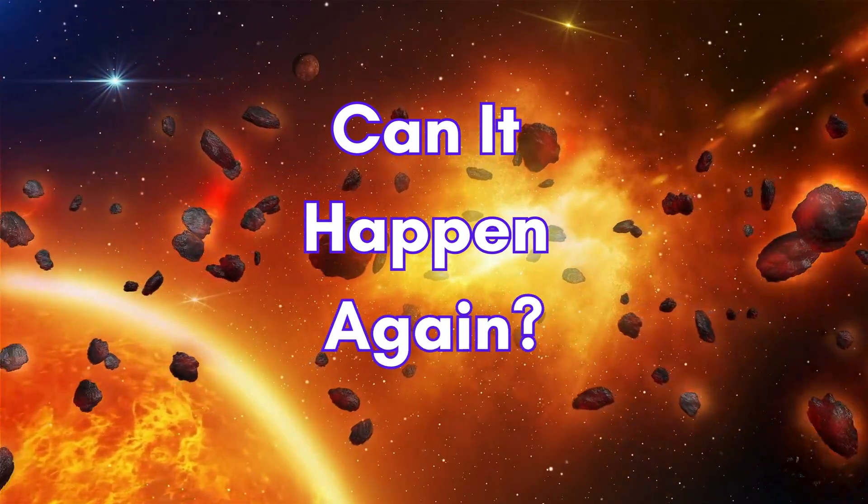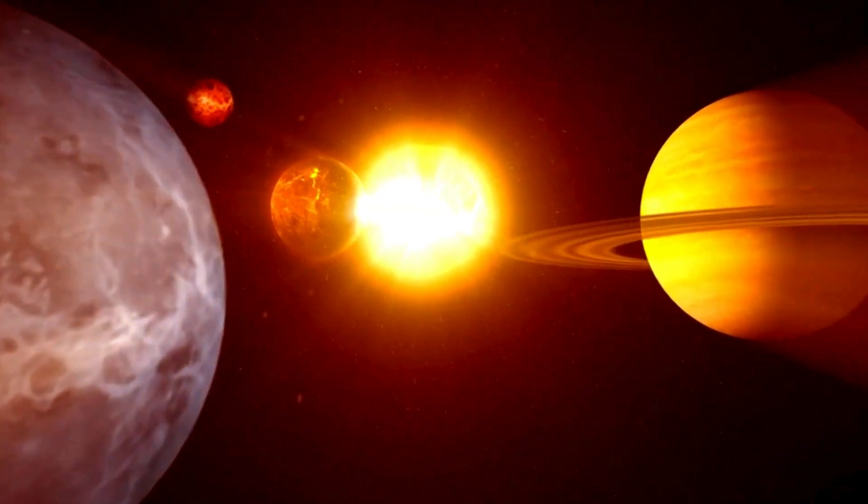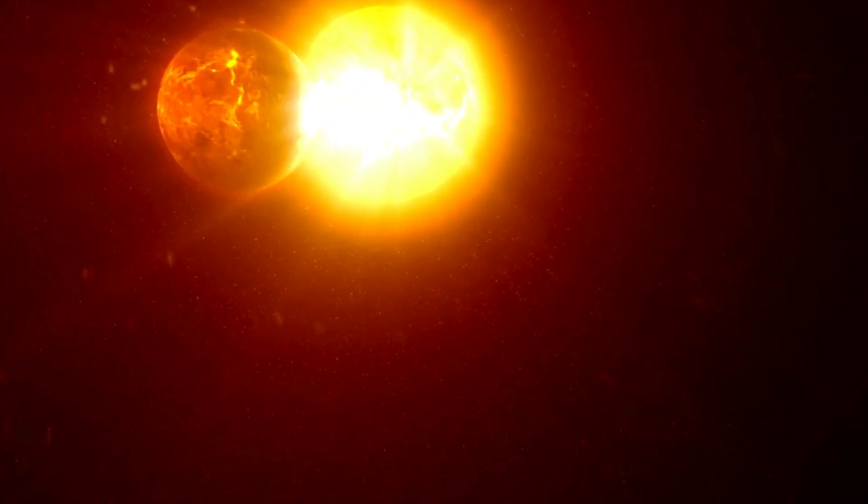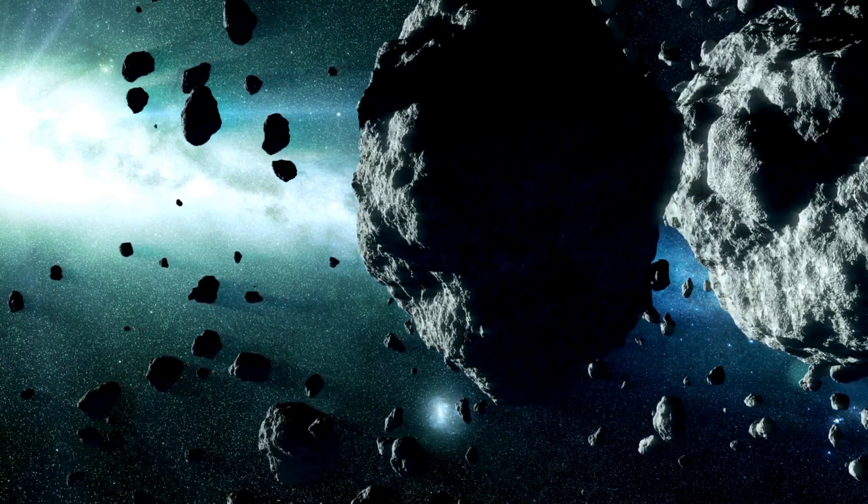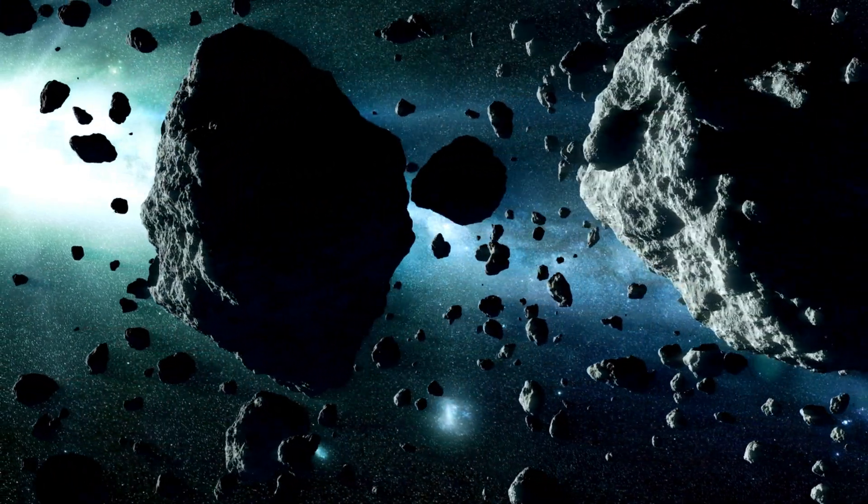Another common question. Could something like this happen again? Thankfully, no. The solar system has settled down since those wild early days. Most of the rogue objects have either collided with planets or been kicked out of the neighborhood entirely.